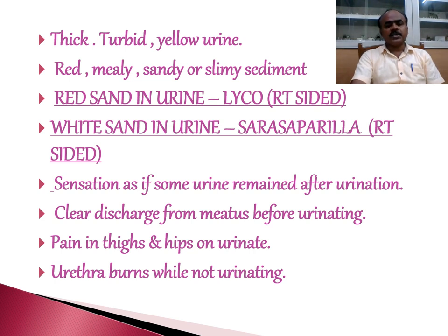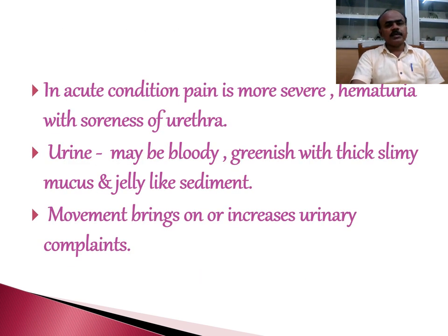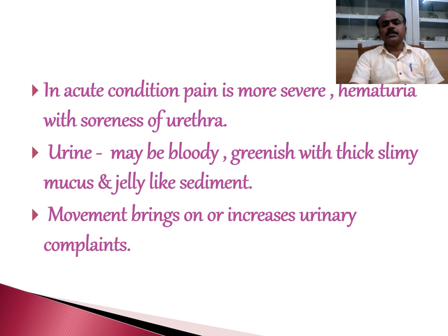There is a sensation as if urine remained after urination. The discharge from the meatus is very clear before urinating. Pain in the thighs and hips during urination. Urethra burns even when not urinating. In acute conditions the pain is more severe. Urine may be bloody, greenish, with thick slimy mucus and jelly-like sediment. Movement brings on or increases urinary complaints, as movement can shift the calculi in the renal system, bringing on the pain.